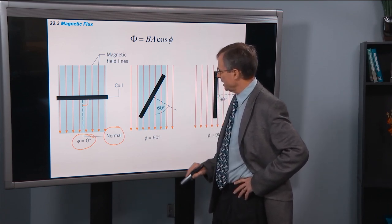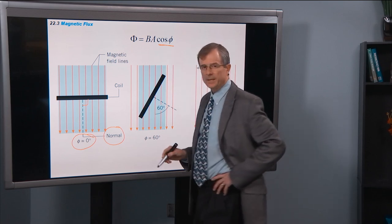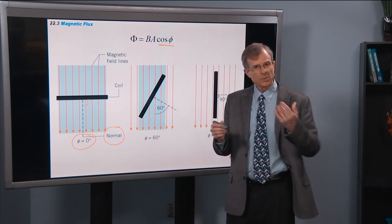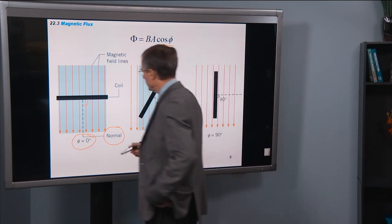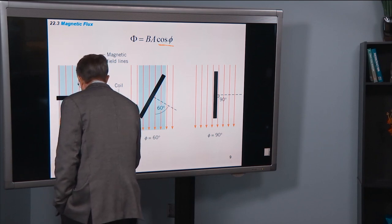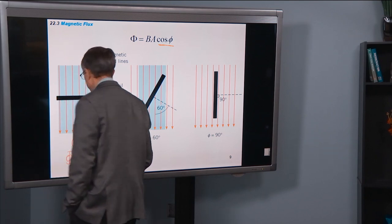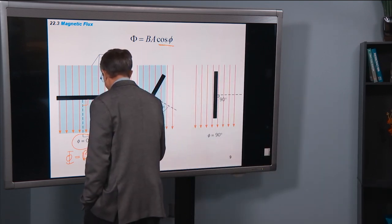So in this case, if Φ equals zero, then cosine of Φ, what's the cosine of zero? Well, it's one. Okay, so the flux in this case is just going to be B times A times 1, which is just B times A. So we get the maximum possible flux.